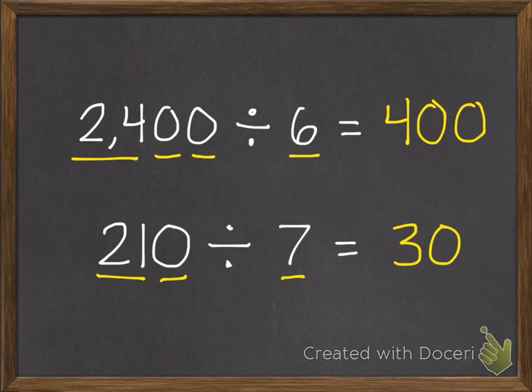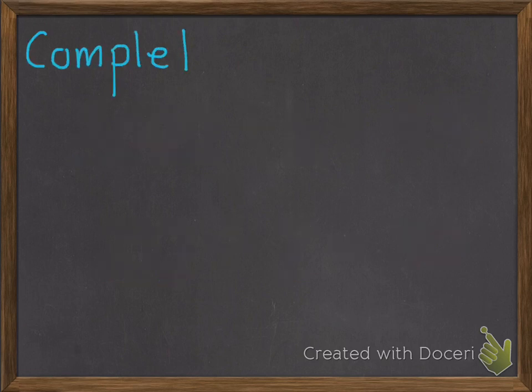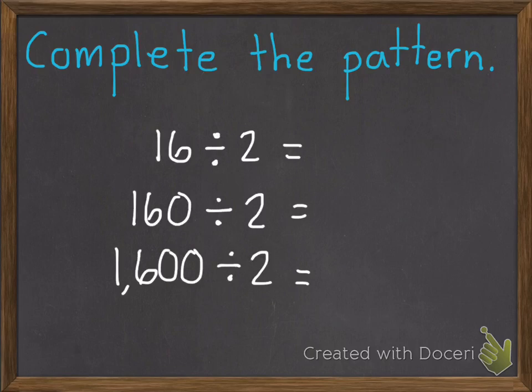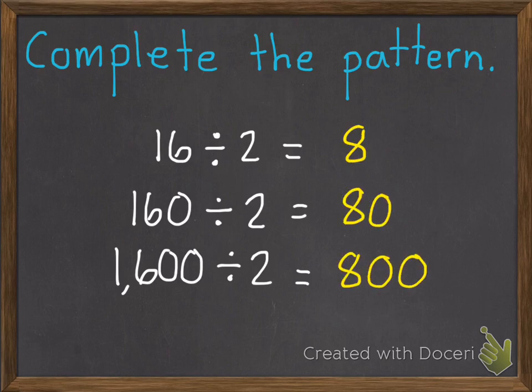Okay, now two practice problems for you. First, complete the pattern. And here's your pattern. 16 divided by 2, 160 divided by 2, 1,600 divided by 2. Go ahead and pause. 16 divided by 2 is 8, then 80, then 800.